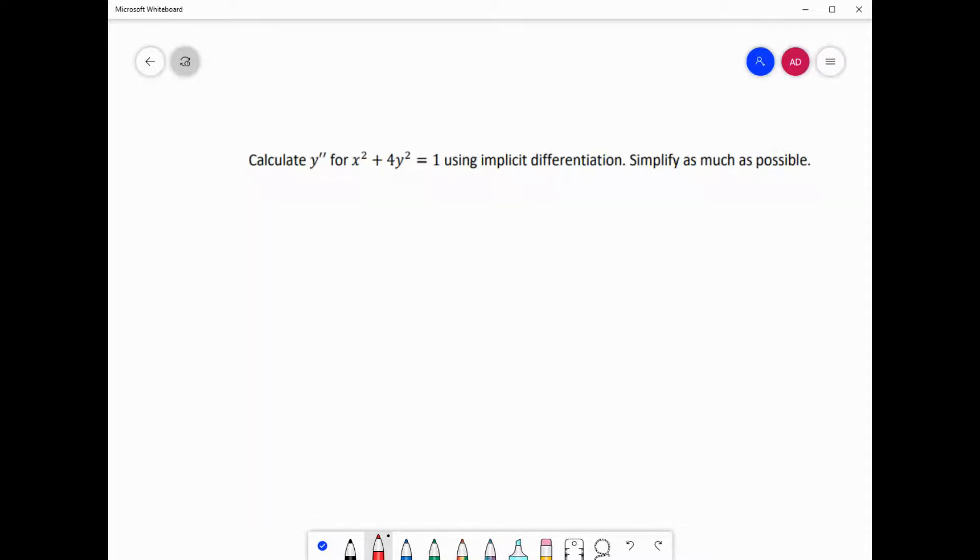All right, so the math dealer here, and today I'm going to do a little quick video on finding the second derivative using implicit differentiation. Yes, this totally is a 100% shout out to my AP Calc kids. Okay, so here we go. X squared plus 4Y squared equals 1. First thing is, of course, you're going to take its derivative.